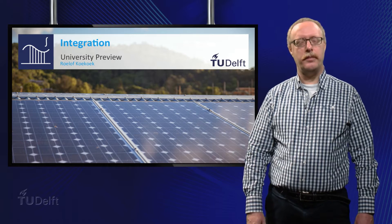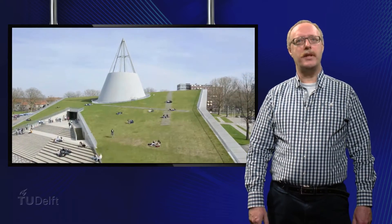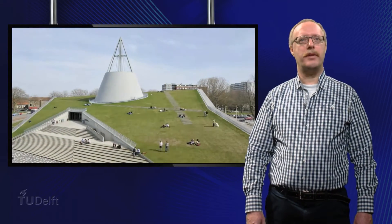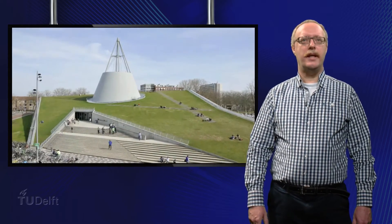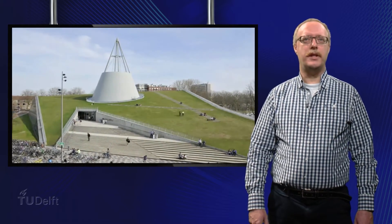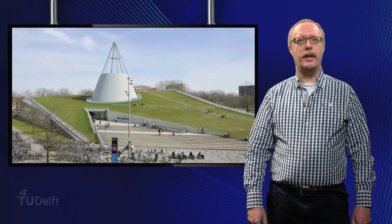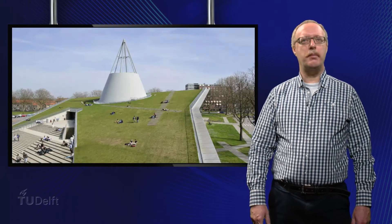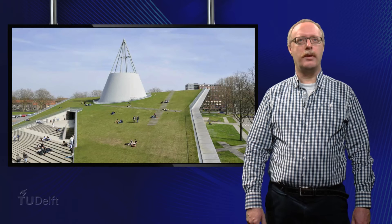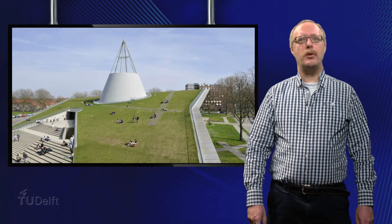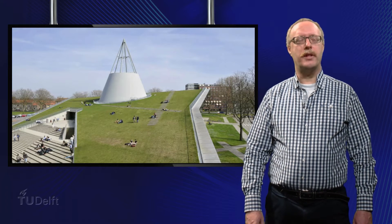Let us look at an example. Here we see the library of the Delft University of Technology. As you can see, it has a rather fancy shape, with a roof covered with grass. It was designed by the Delft architects of Mekano. Suppose you were asked to build a suitable air conditioning system for this library.